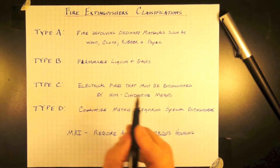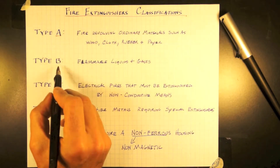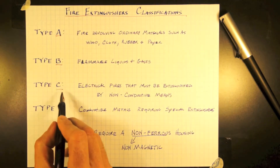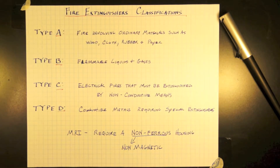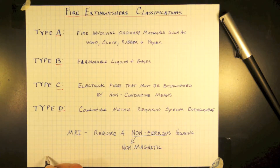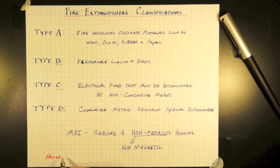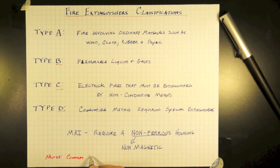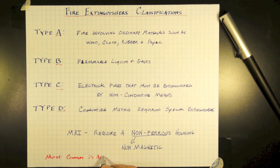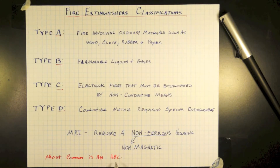Our standard, most common fire extinguisher is an ABC fire extinguisher. Typically, that is a powder type material, able to put out grease fires such as you have at home, as well as standard wood, cloth, and electrical fires.